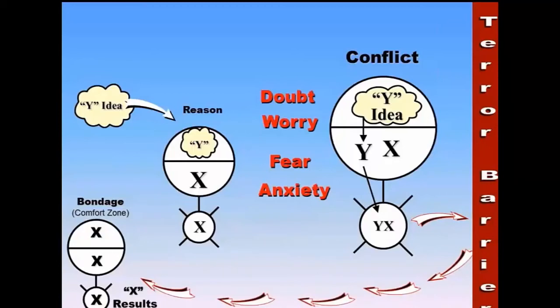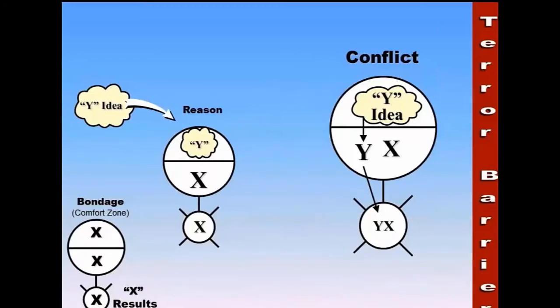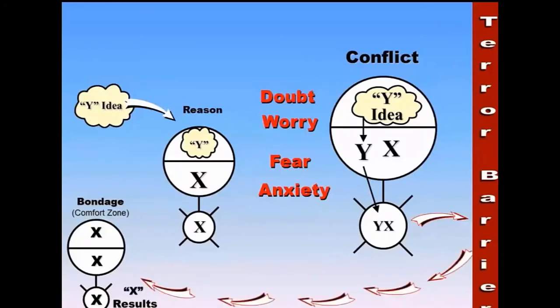We hit the terror barrier. And instantly and automatically, doubt, worry, fear, anxiety strike. And what do we do? Boom! Right back into bondage. I may not have much, but at least I know what I've got. I'm not going to get hurt here. They've taken the Y idea and said, I'm going to do this. The second they step out and act on it, all hell breaks loose. A barrier comes up. You hit that barrier and bingo. You start to doubt yourself and you start to worry.